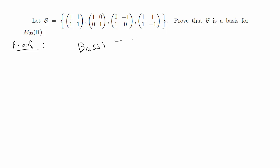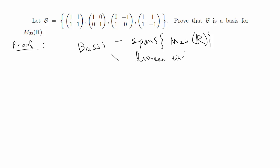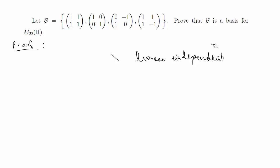By definition, a basis spans whatever you're trying to form a basis of. In this case B has to span M₂₂(ℝ), and also whatever is spanning it has to be linearly independent. By definition, if the values are linearly independent and they span — in this case a matrix space — then it does form a basis. If we do those two things we can prove this problem.